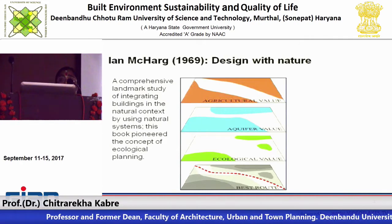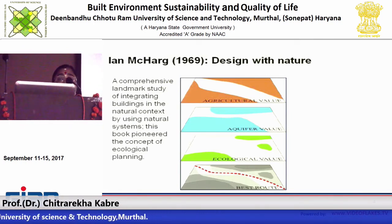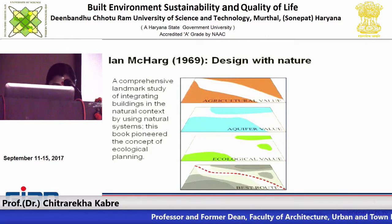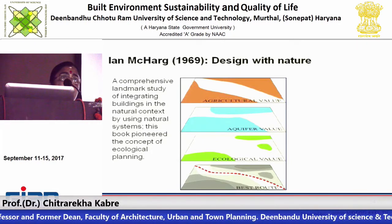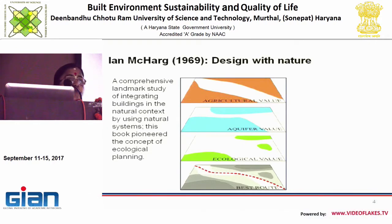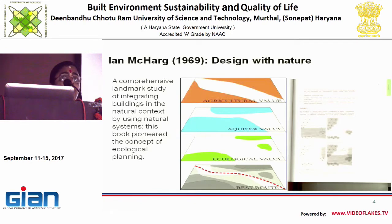Starting with the site, Ian McHarg in 1969 in his classical book 'Design with Nature' gave a comprehensive study of how buildings can be integrated into the natural context using the natural system. This book pioneered the concept of ecological planning. He talked about forming layers — every site you take up should be systematically analyzed. Instead of just looking intuitively and saying everything is perfect, we need an informed decision based on a database of all the required information.